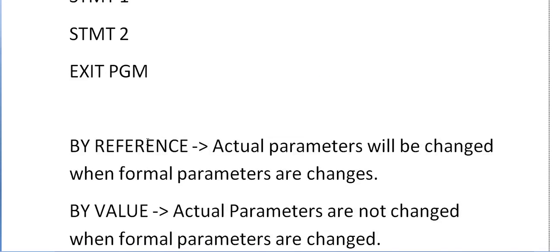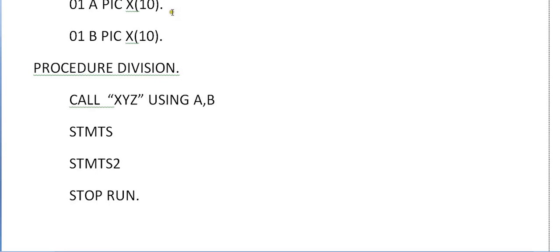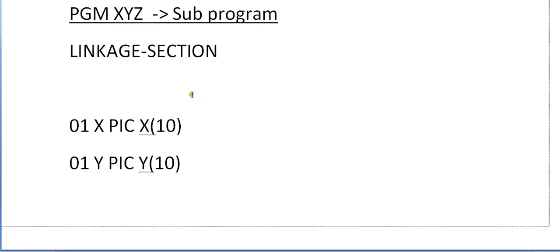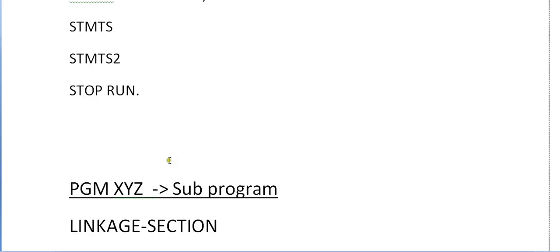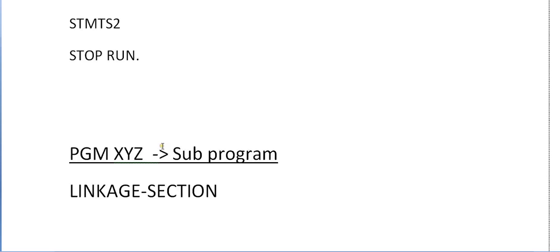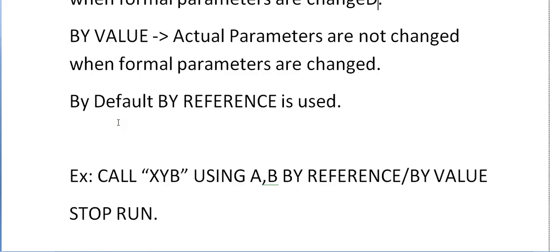We have two different kinds of CALL: CALL USING BY REFERENCE and CALL USING BY VALUE. By default we use CALL BY REFERENCE. With BY REFERENCE, the actual parameters will be changed when the formal parameters are changed. Suppose you are passing A equal to 20 and B equal to 30, and in the sub program you change the values to X equal to 50 and Y equal to 60 — those changes get reflected back into the main program, replacing 20 and 30 with 50 and 60.